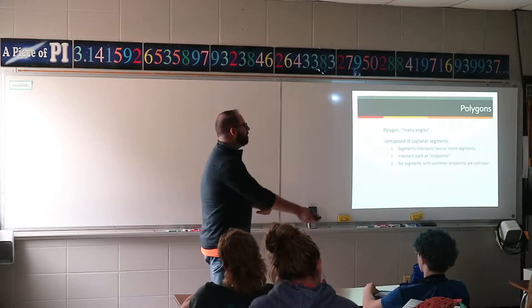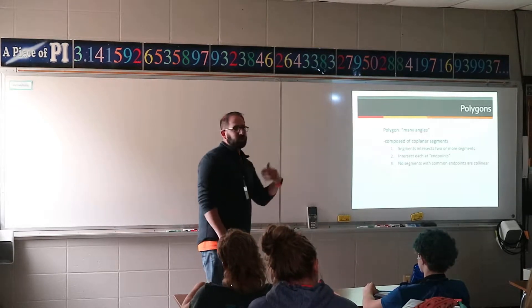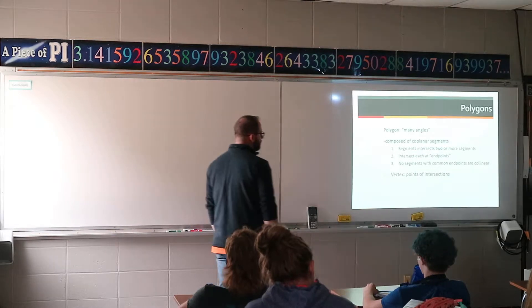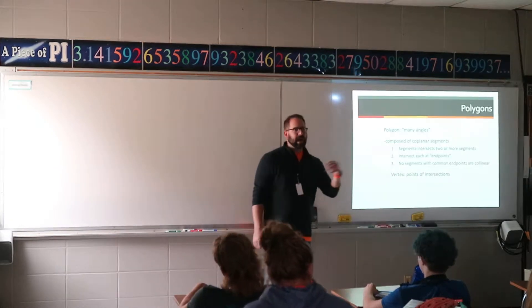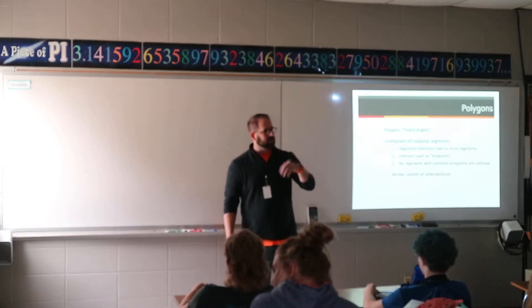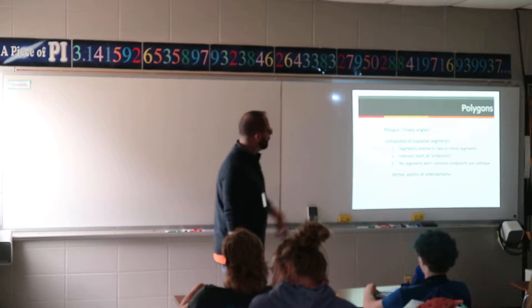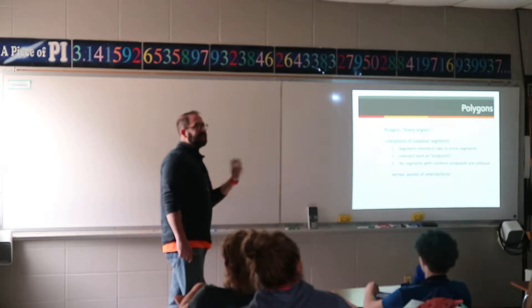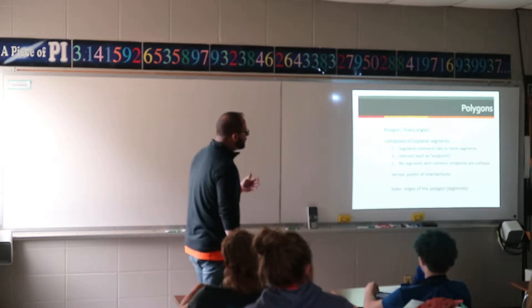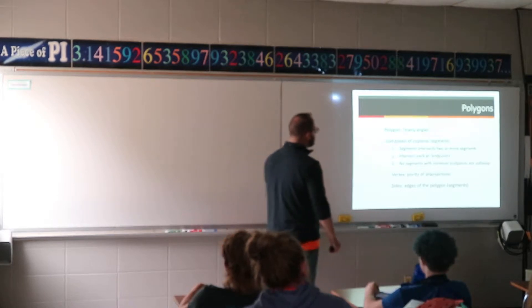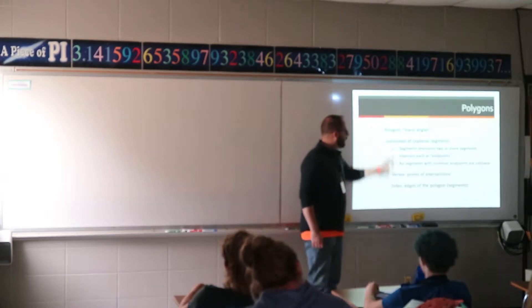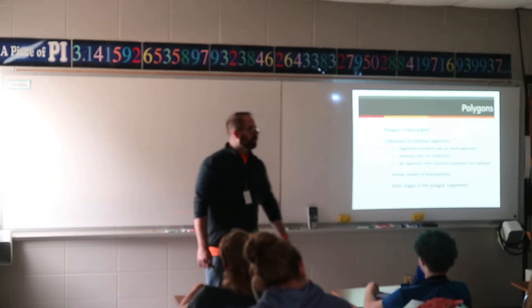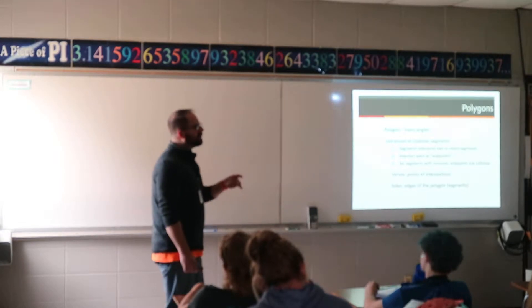Some key words you need to know: vertices, or a vertex — that is where those endpoints are, the points of intersection, the corners. Plural is vertices. Then the edges or sides of the figure. Any questions with the review of the definition?